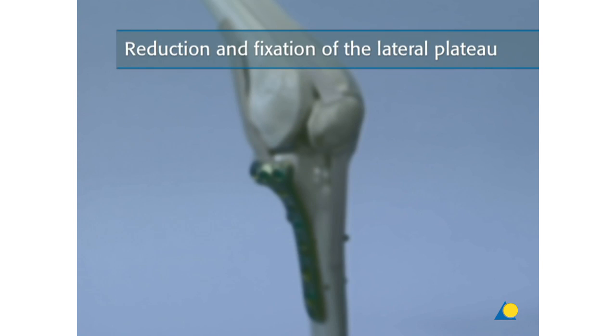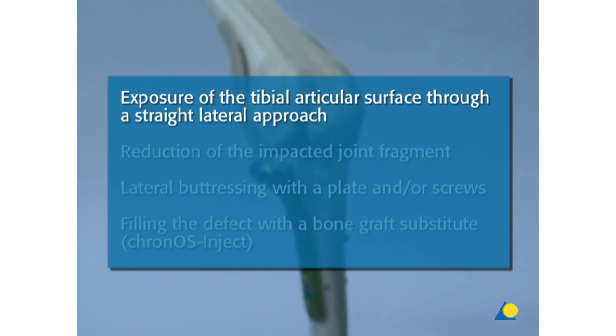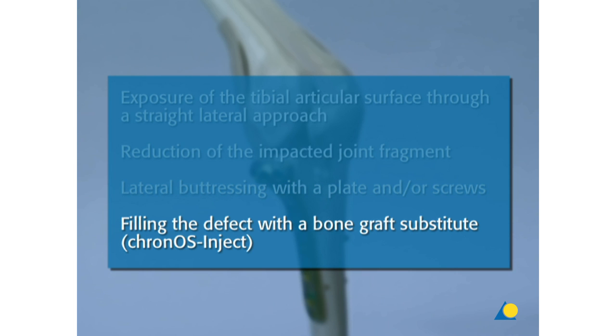Reconstruction of the lateral plateau. First, exposure of the tibial articular surface through a straight lateral approach. Second, reduction of the impacted joint fragment. Third, lateral buttressing with a plate and screws. Fourth, filling the defect with a bone graft substitute, Kronos inject.